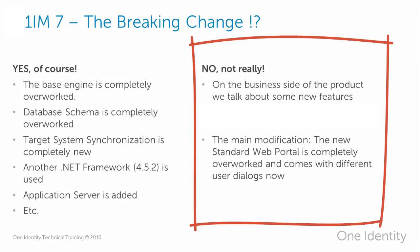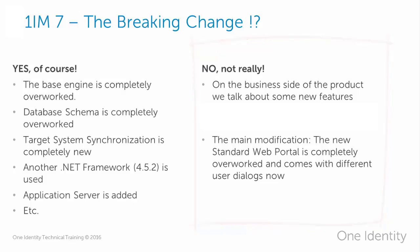Identity Manager 7, from a business perspective, is not really different from version 6.x. People who have worked with version 6.x can easily work with Identity Manager 7 because, from a business perspective, all the functionality works like before. The main modification in version 7 for business people is just the new standard web portal. It provides the same functionality as before, but in version 7 everything looks much more modern and branded, and the standard web portal comes with simplified user dialogues.